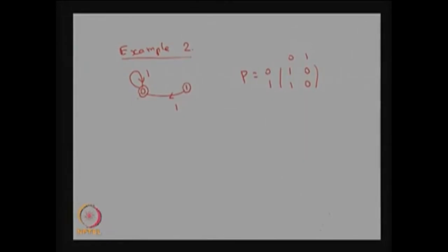Now we will try to find out the classification of the states. For state 0, P(0,0) of 1 is 1 — that is, the one-step transition probability of the system moving from state 0 to 0 is 1. This implies that state 0 is an absorbing state.